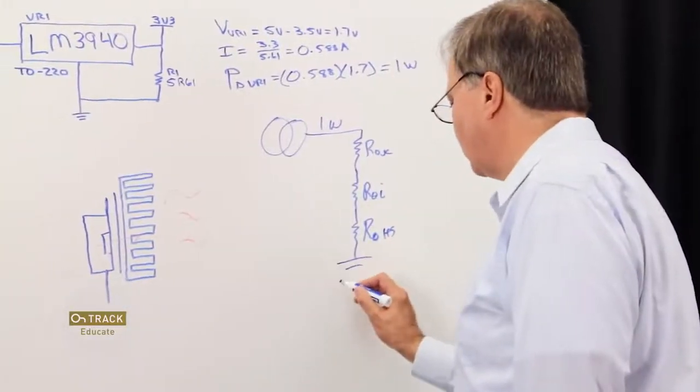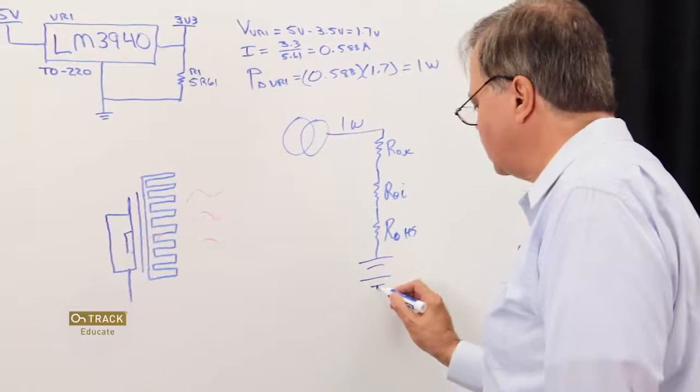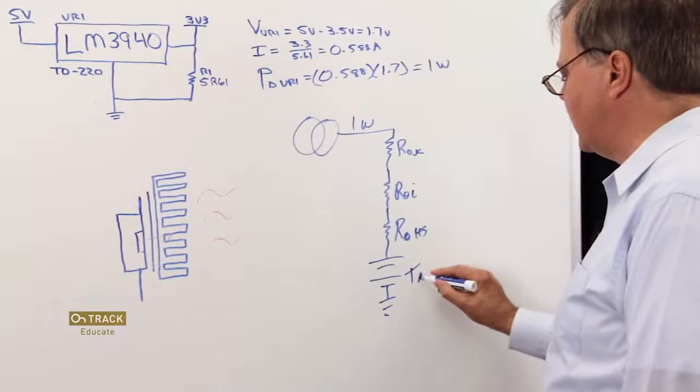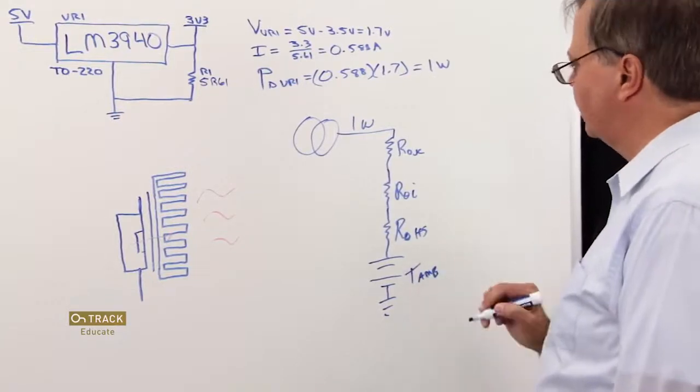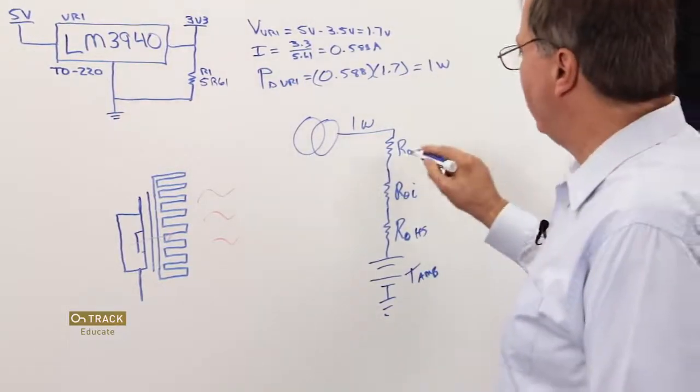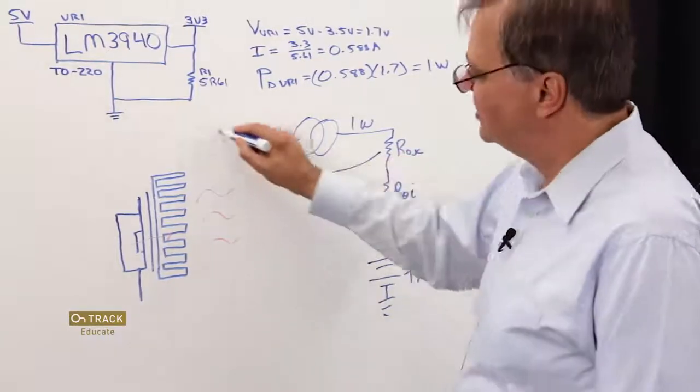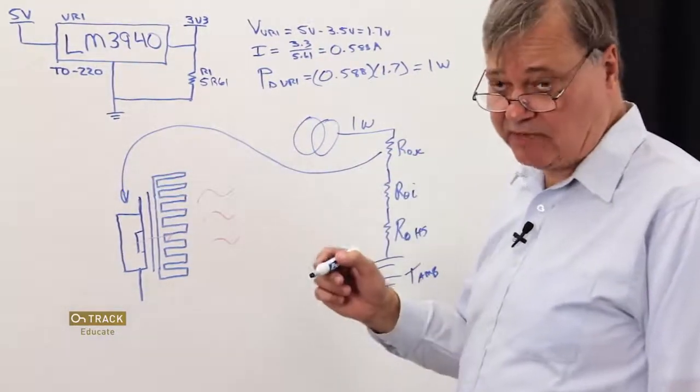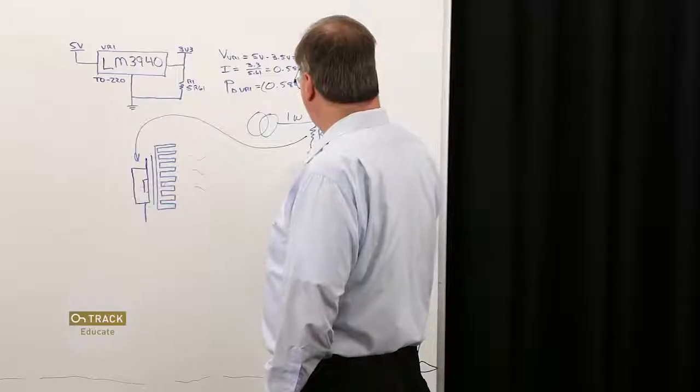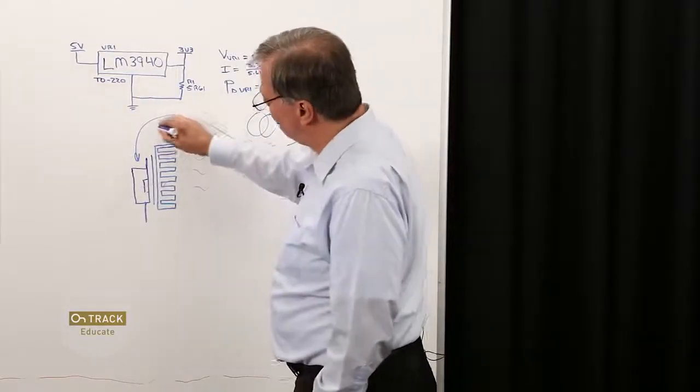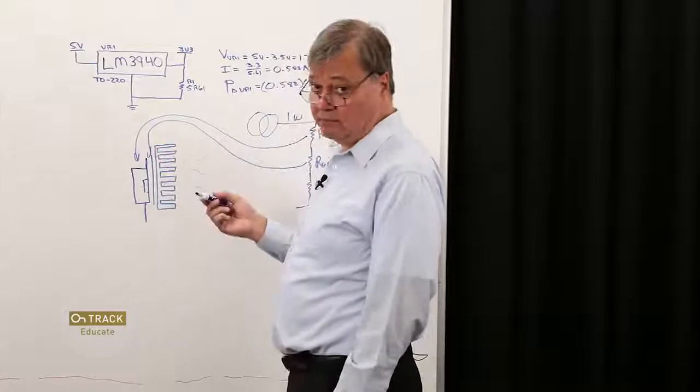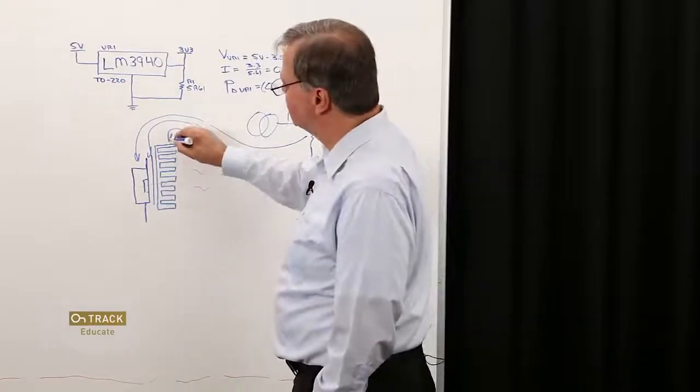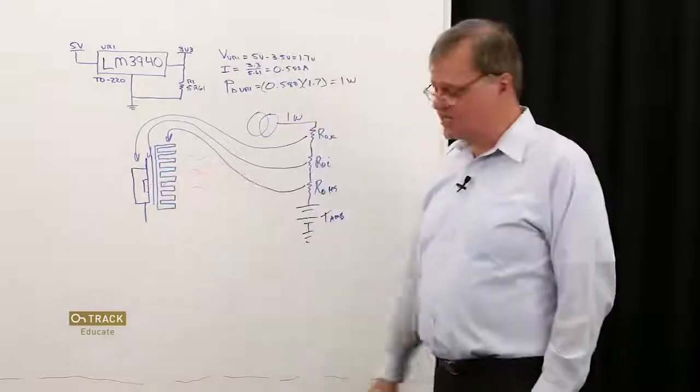You'll remember that we used a voltage source to model our ambient temperature that is biasing us up to an operating point. So, I'll represent my ambient temperature with a voltage source, and this represents T ambient. So, we've got our junction to case resistance, thermal resistance for our semiconductor device. Then, we've got our thermal resistance for our interface material, and then we have the thermal resistance of our heat sink to ambient temperature, and this is what we're going to be looking at.